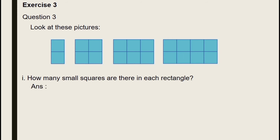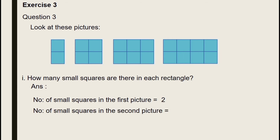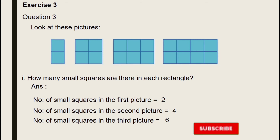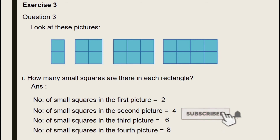Now look at how many squares are in the first picture. In the second picture, there are 4 squares. The number of small squares in the 3rd picture is 6. The number of small squares in the 4th picture is 8.